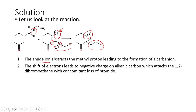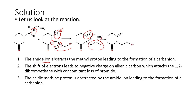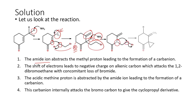Once this happens, the amide anion still present in the system abstracts the most acidic proton. There are two types of acidic proton: one at the substituted methine carbon, and one as the methylene proton alpha to the carbonyl compound. The alpha methylene proton is more acidic, so the amide anion abstracts that proton, creating a carbanion on that carbon. This carbanion attacks the adjacent carbon by an SN2-type attack, leading to formation of a cyclopropyl derivative.